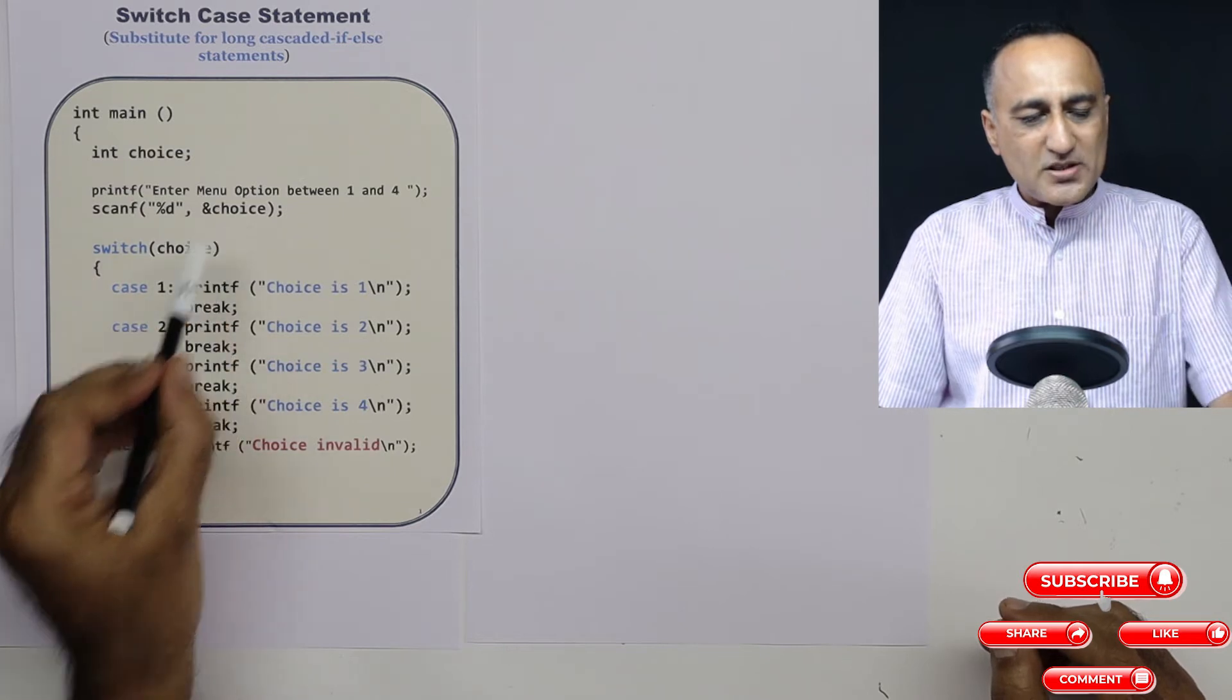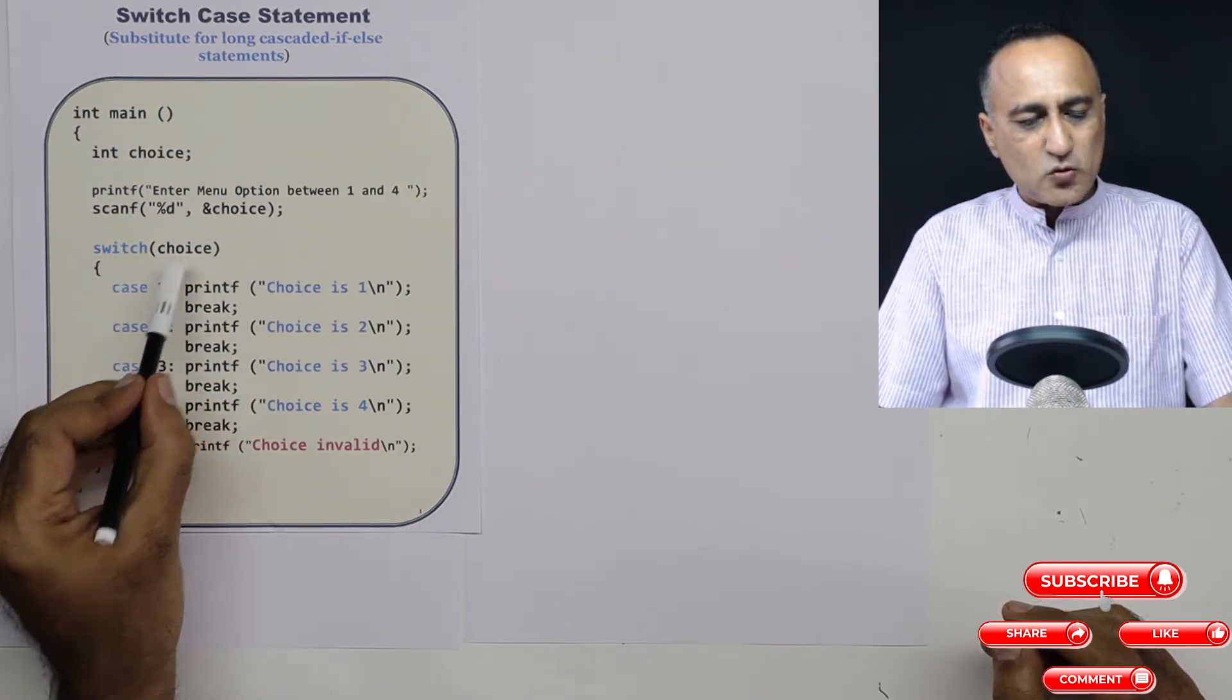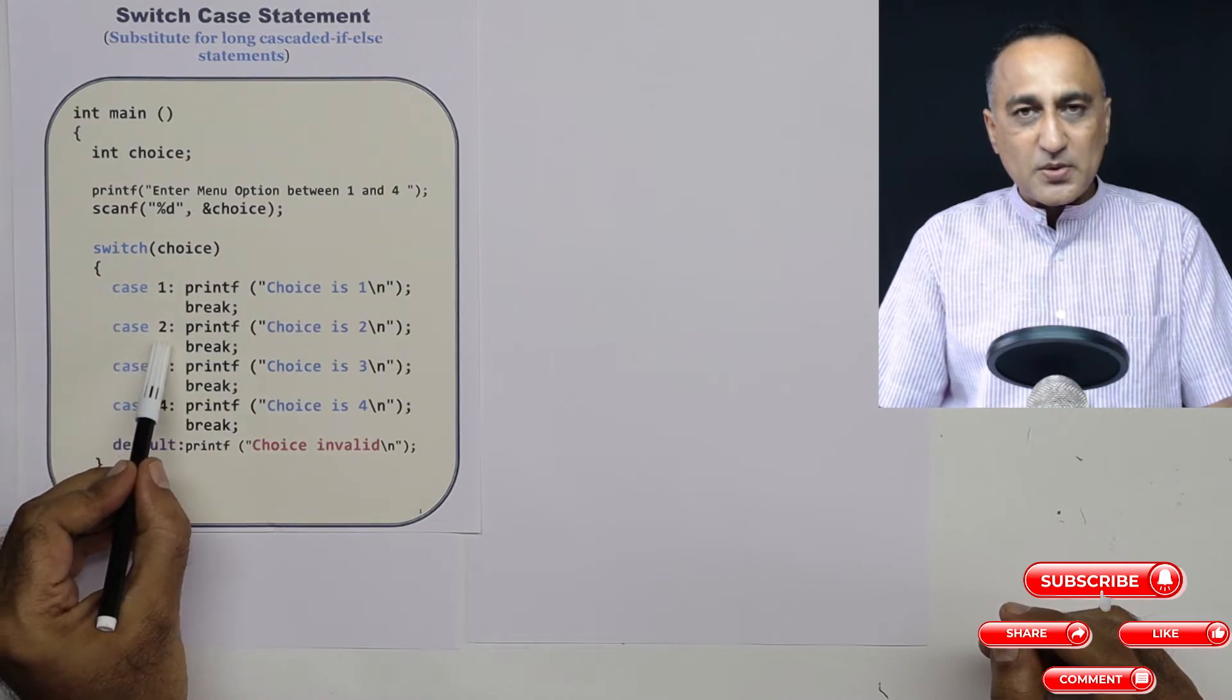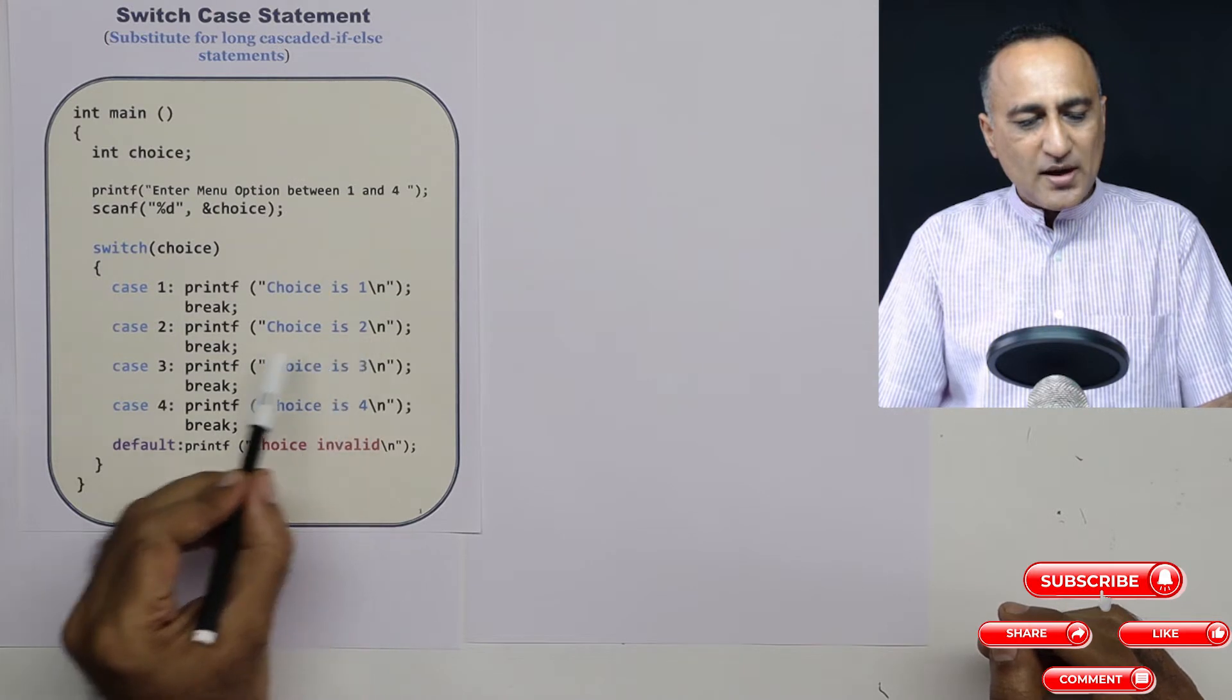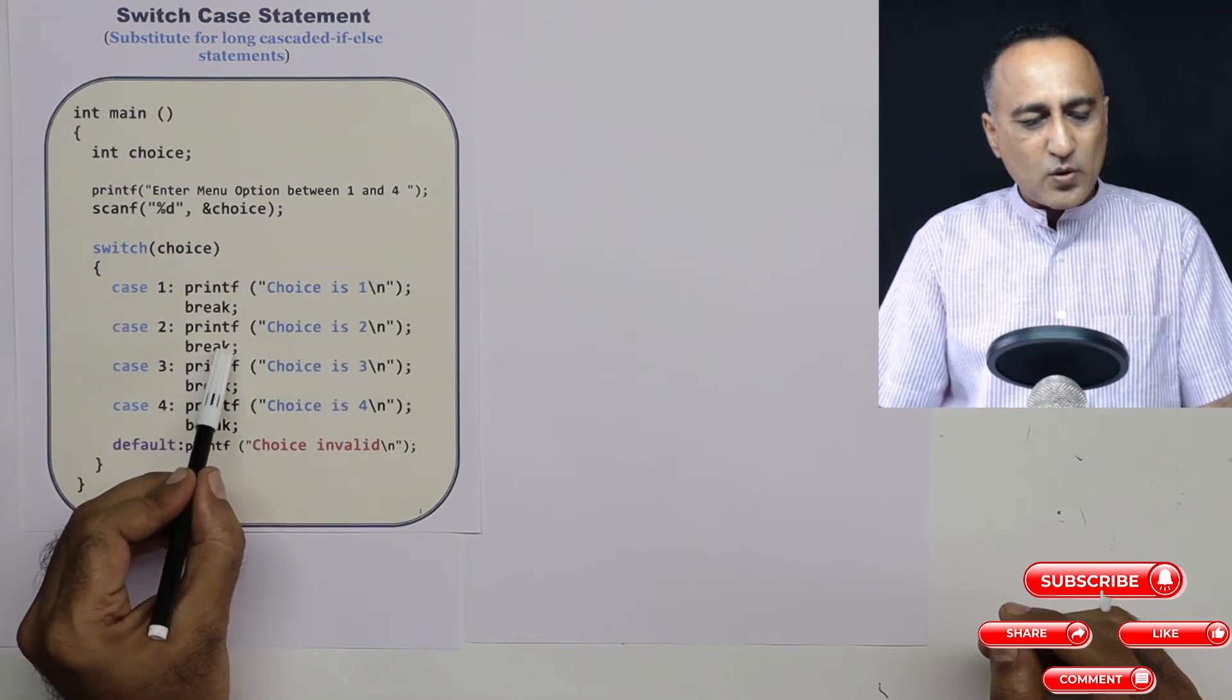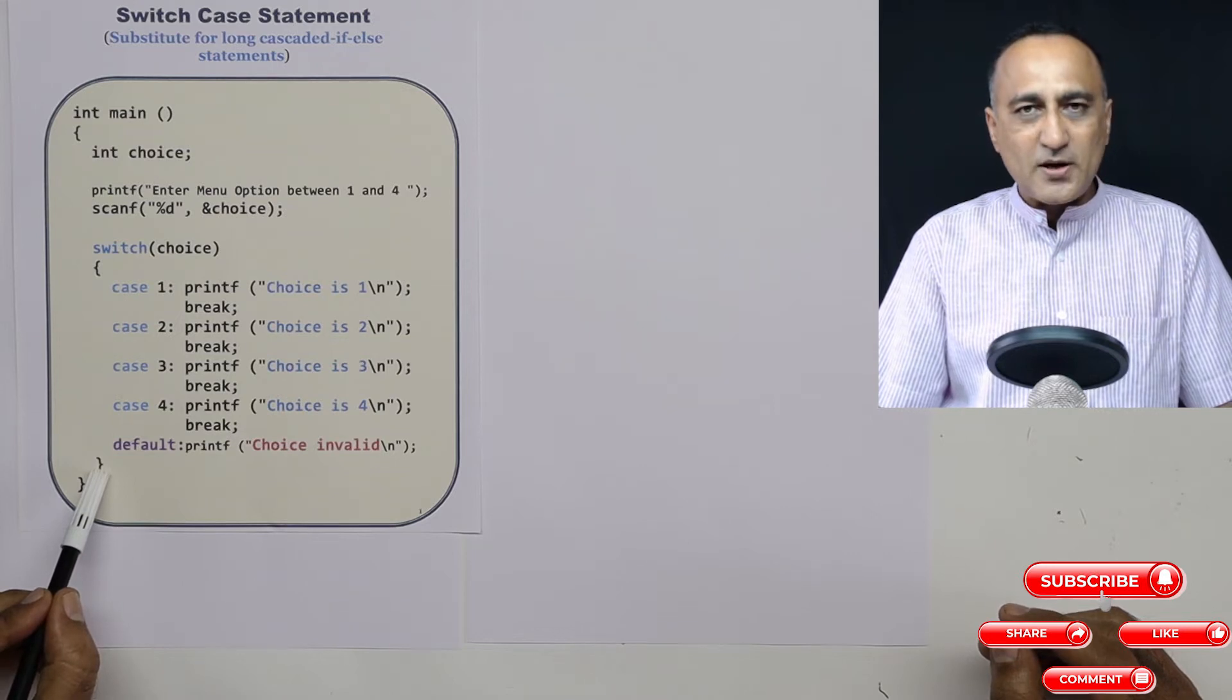Let's say the user entered choice as 2. So what will happen is switch(choice), choice is 2. So 2 matches with this particular 2, it's going to print the message 'choice is 2', and then the break statement, once it encounters the break statement, it's going to come after this closing bracket.